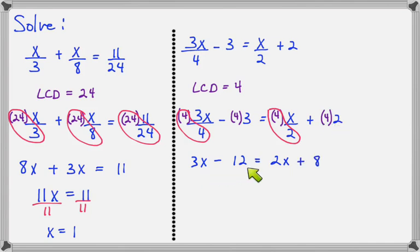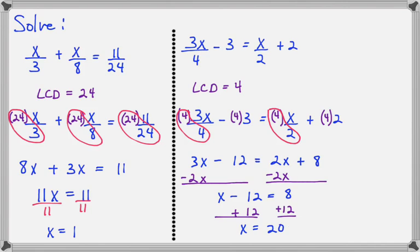And now I have x and constant on the left side, x and constant on the right side. Let's eliminate the smallest x term by doing minus 2x on each side. That's going to leave us with x minus 12 equals 8. We will add 12 to both sides and then we'll have x equals 20.